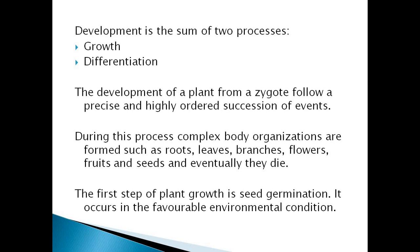Development consists of two processes: one is growth and the other is differentiation. Growth is the increase in size — that means a small plant with time becomes larger and elongates. Differentiation means it develops different leaves and branches, which are absent in a baby plant or just-germinating plant.